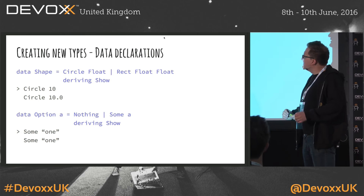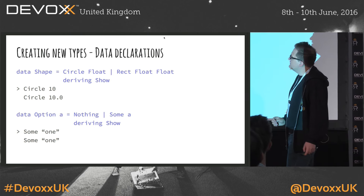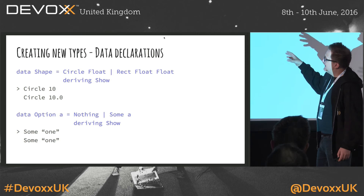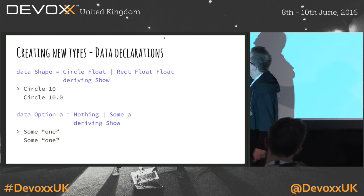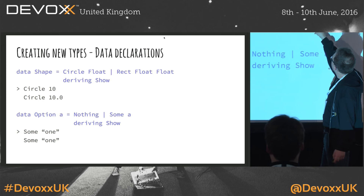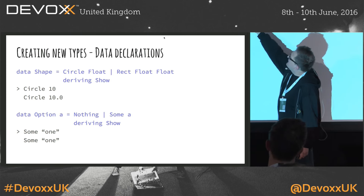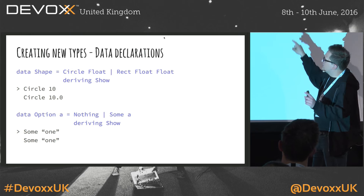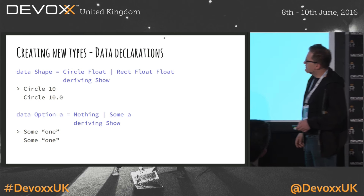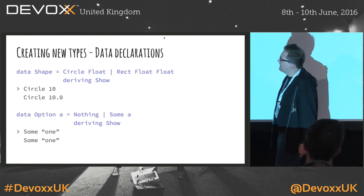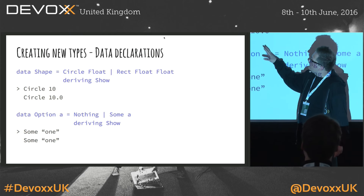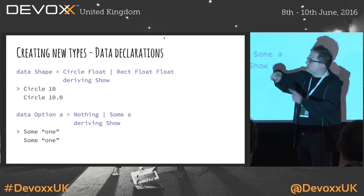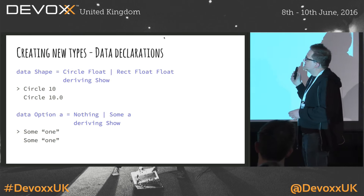That's also a way to create data constructors with some values. For example, we have a shape type, and we say this can be a Circle — a constructor that takes a Float for the radius — or a Rectangle that takes two Floats. So if you create an instance of that type, you just provide: Circle, radius 10.